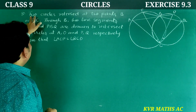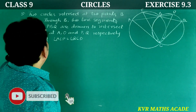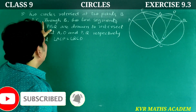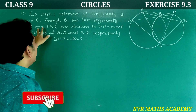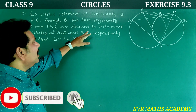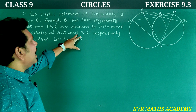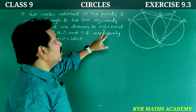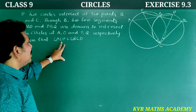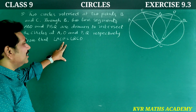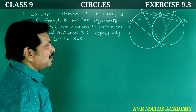Ninth question: Two circles intersect at two points B and C. Through B, two line segments ABD and PBQ are drawn to intersect the circles at A, D, P, and Q respectively. Prove that angle ACP is equal to angle QCD.